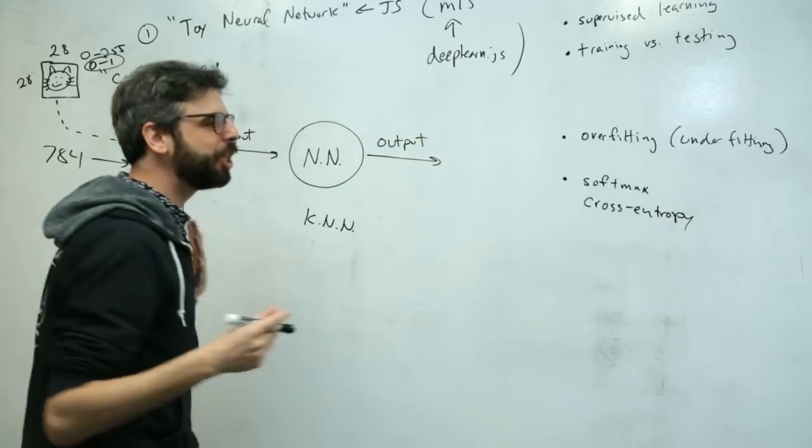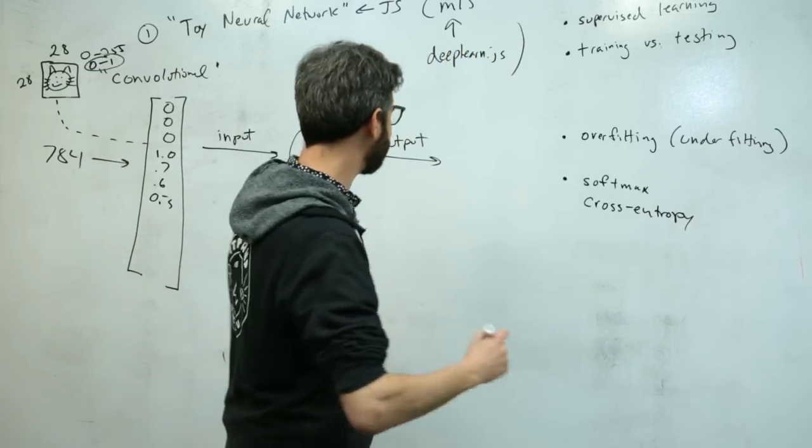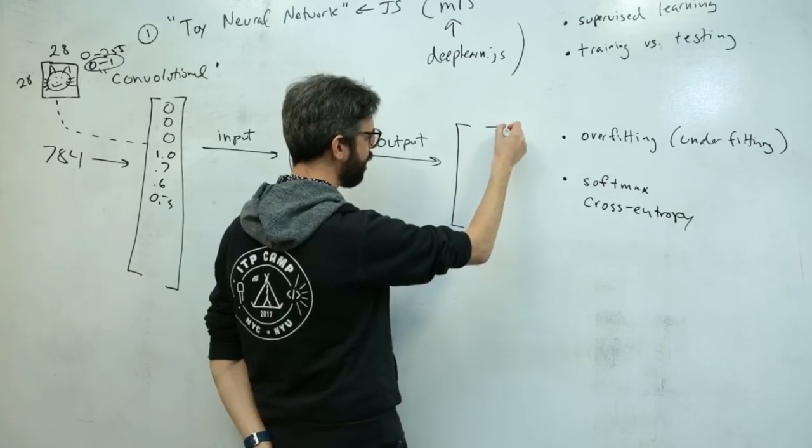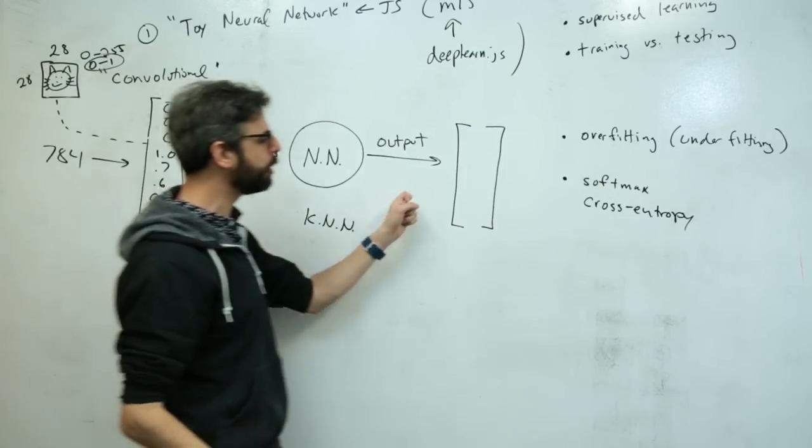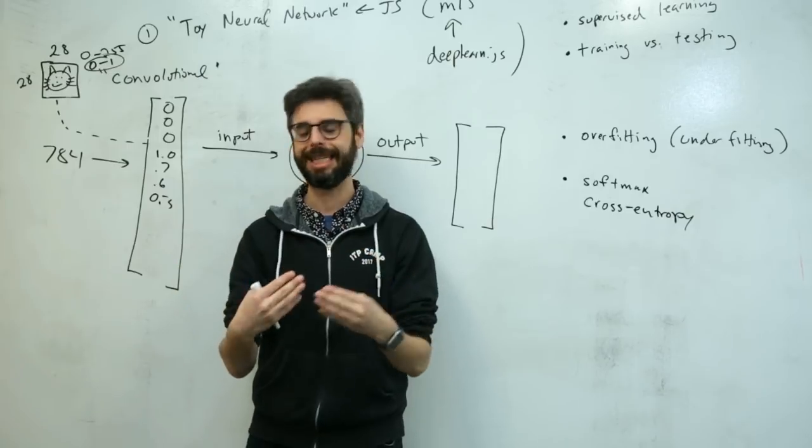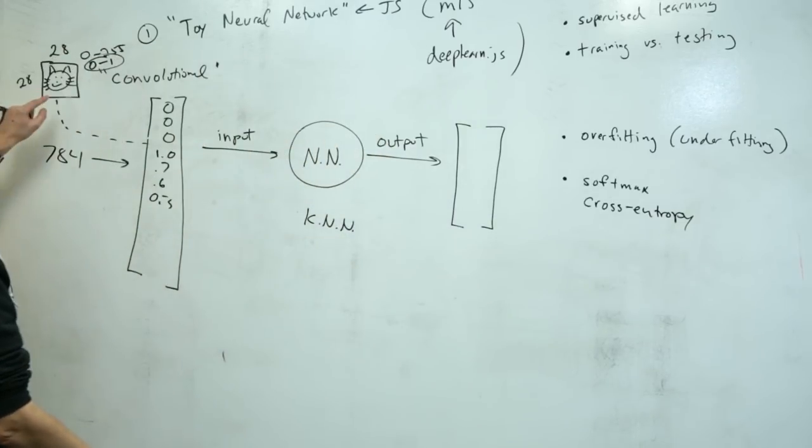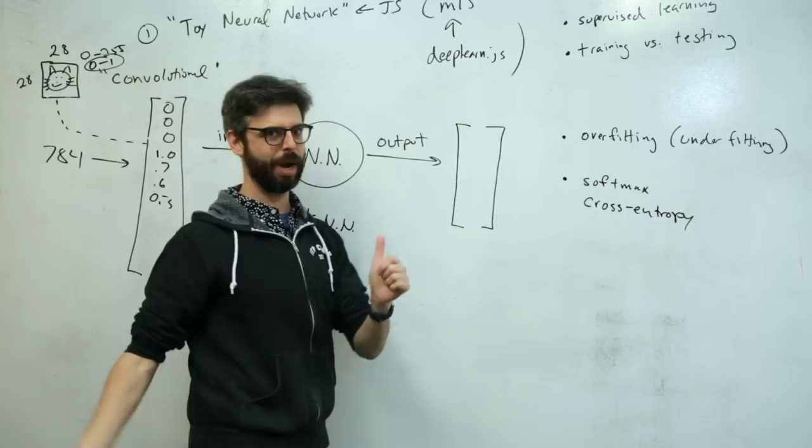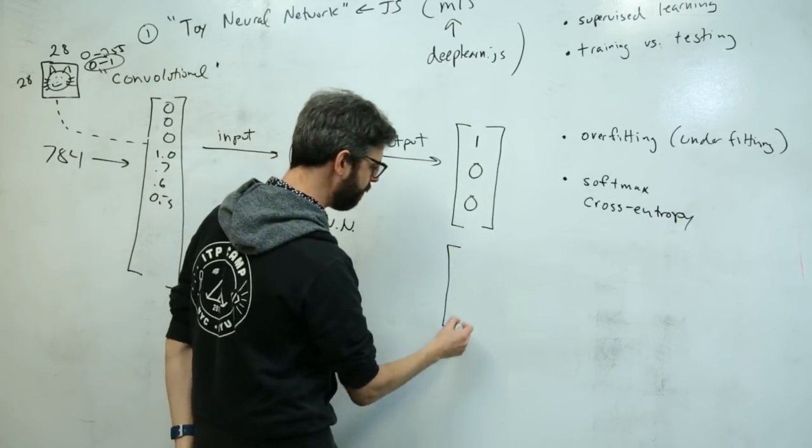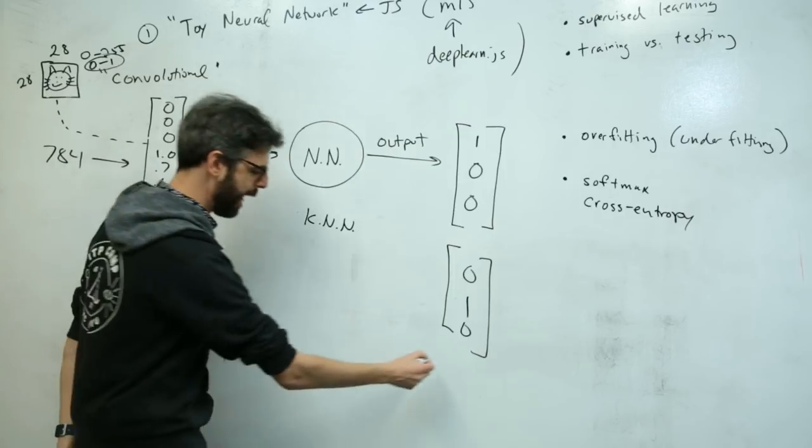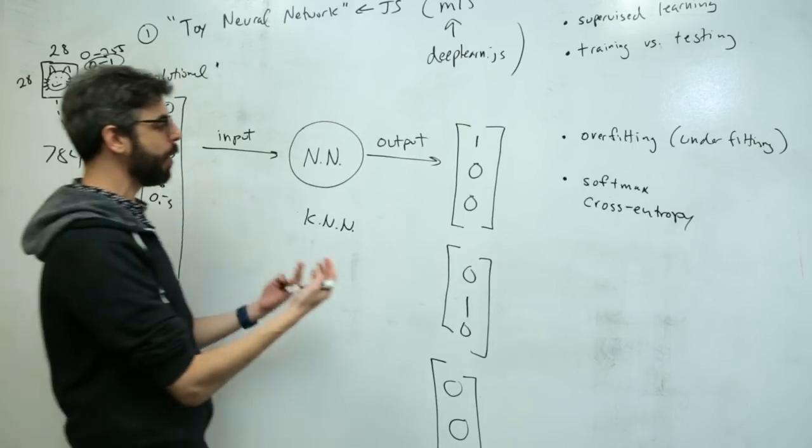I want those numbers to represent the probability that this particular image is any one of those given categories. For example, if it's a kitty cat instead of a rainbow or a cupcake, maybe I want it to give me that output. If it is a rainbow, maybe I want it to give me this output. If it is a cupcake, maybe I want it to give me that output.